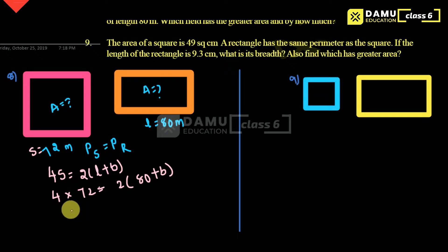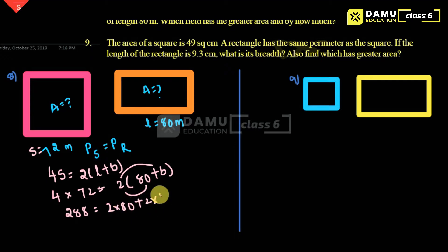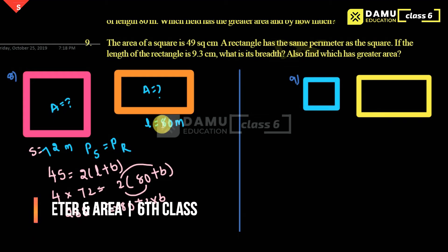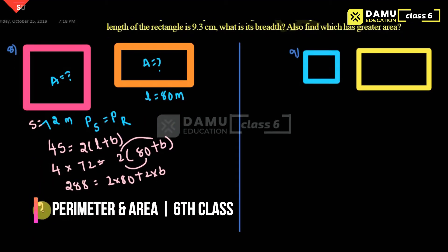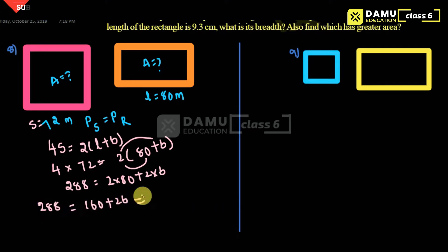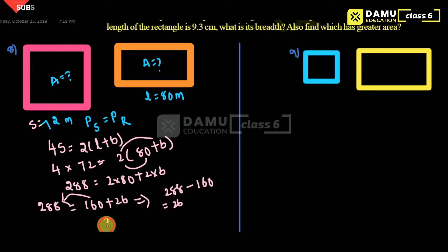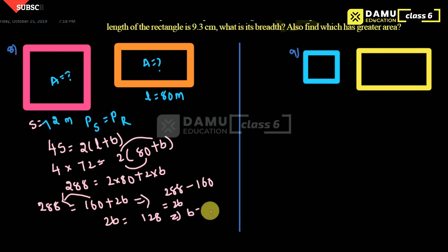So 4 into 72 gives us 288, which will be equal to 2 into 80 plus 2 into B. So 288 equals 160 plus 2B. Then, moving 160 to the left side it becomes minus, so 2B equals 288 minus 160, which gives 128. Then B equals 128 divided by 2.